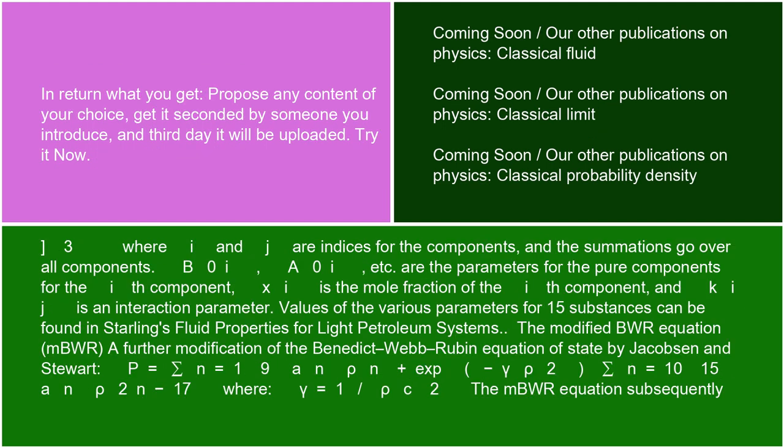Where i and j are indices for the components, and the summations go over all components. B₀ᵢ, A₀ᵢ, etc. are the parameters for the pure components for the ith component. xᵢ is the mole fraction of the ith component and Kᵢⱼ is an interaction parameter. Values of the various parameters for 15 substances can be found in Starling's Fluid Properties for Light Petroleum Systems.